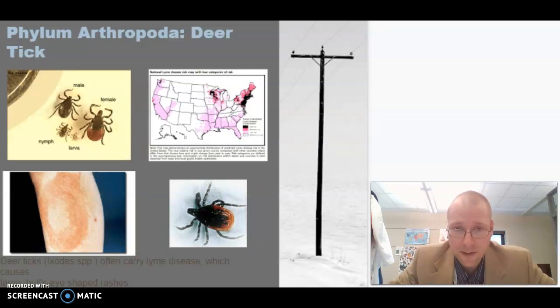And then we have the deer tick, also an arachnid. Look at those eight legs. The deer tick can spread Lyme disease. Not a nice disease to have. You can see that when this map was printed in Michigan, it was not a high-risk area. But Lyme disease causes this bullseye rash and causes severe health concerns.